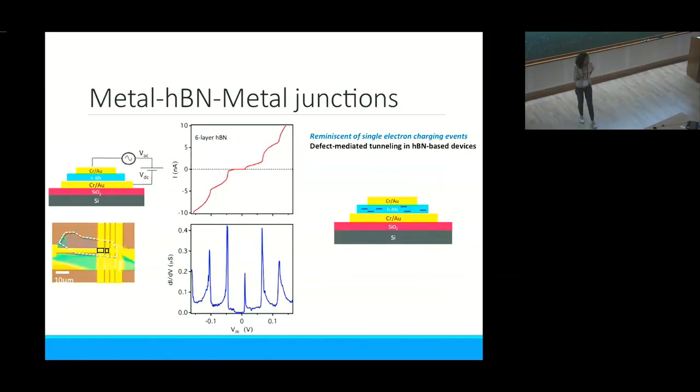You end up with two different processes: direct tunneling where tunneling happens across the entire barrier, just like what you learn in quantum mechanics, and defect-assisted tunneling where tunneling happens via defect states. When you have a very thin device, direct tunneling dominates. When direct tunneling is suppressed, defect-assisted tunneling starts to show up. That's why when we made the boron nitride quite thick, direct tunneling was very low and defect-assisted tunneling showed up.